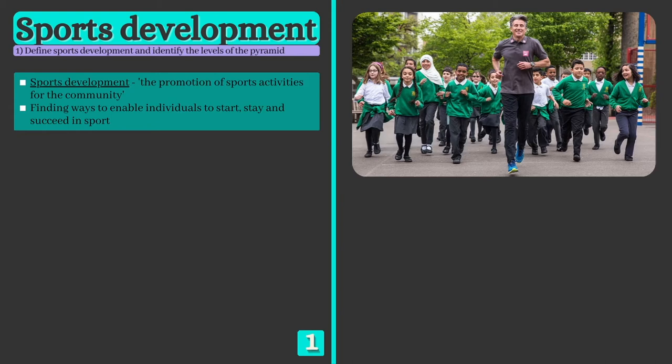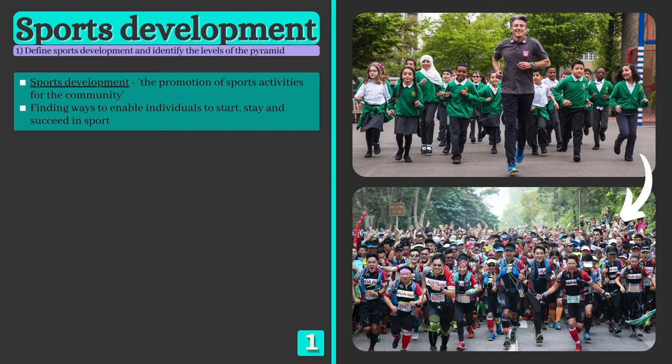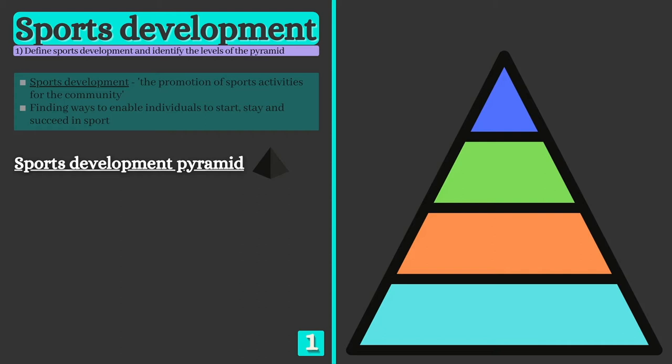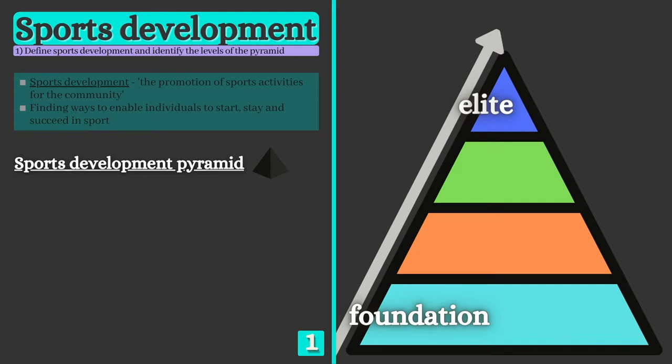Sports development is often viewed as a pyramid, with a large number of people at the base taking part at foundation level or for recreation, and moving upwards towards the peak, where only a small number of elite athletes reside. We'll take some time now to study each level of the pyramid, starting at the bottom and working our way up.